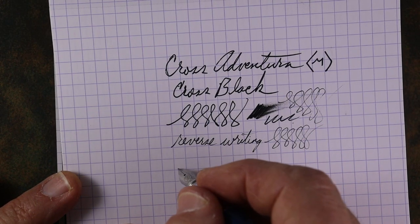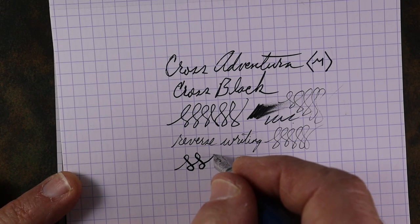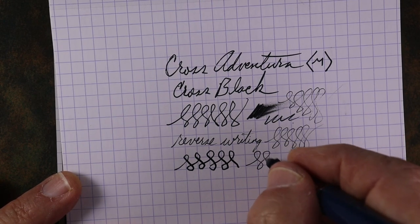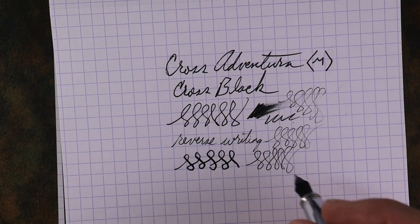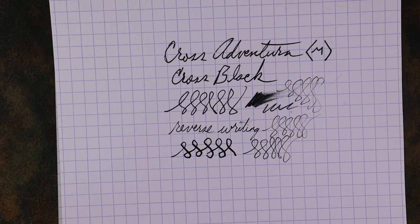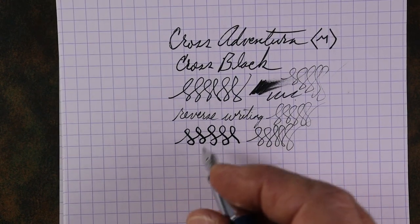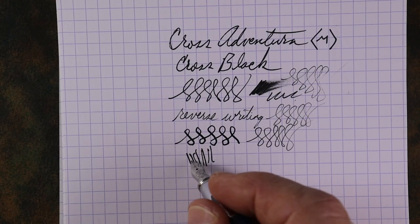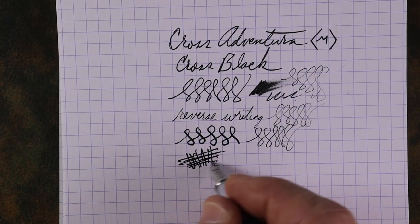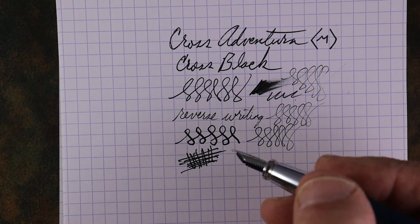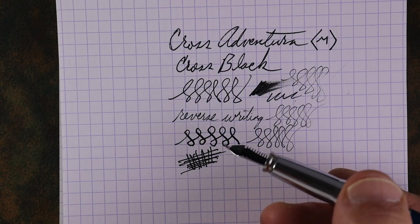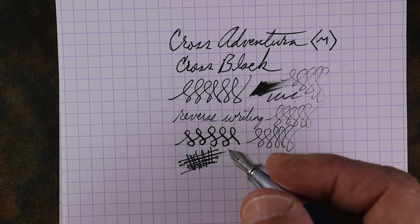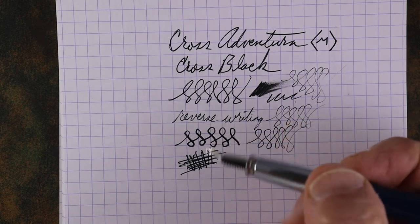As far as line variation, you can eke out a little bit there and get that ink flowing pretty good. In reverse, yeah, you can get it going there but it doesn't hold off long in reverse. This is a good writer. Down strokes, up strokes, side strokes performs very well. Again, there's the feed. It's a comfortable pen to hold in your hand, so all in all my impressions of the Cross Adventure are good.